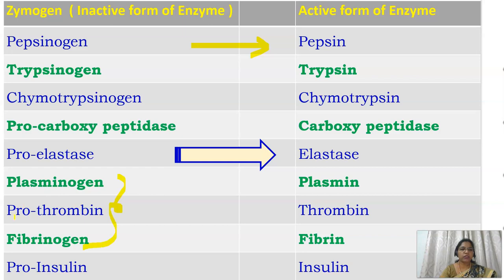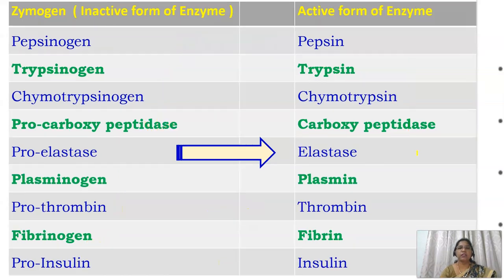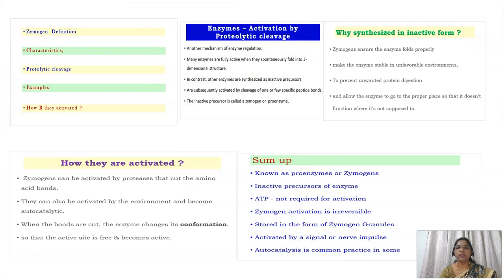The blood clotting factors — plasminogen, prothrombin, and fibrinogen — are converted into their active forms of plasmin, thrombin, and fibrin whenever necessary. Insulin is the active form, and its inactive zymogen form is pro-insulin. The right-hand side of the diagram shows the active forms derived from these zymogens.